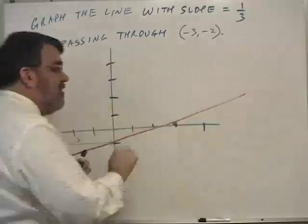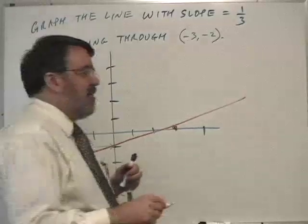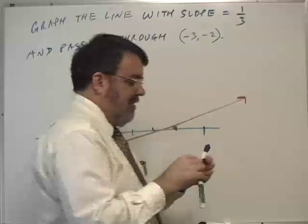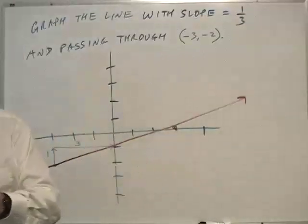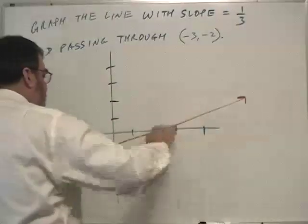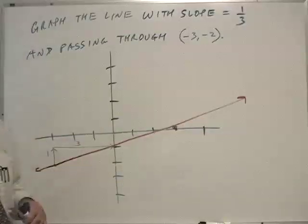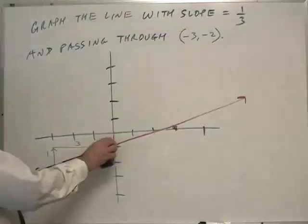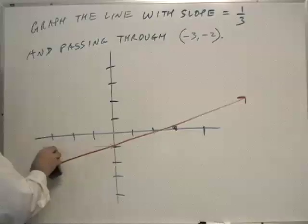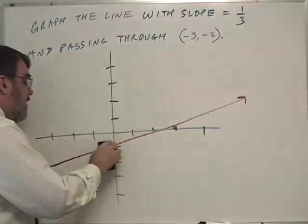This, whoops, I slightly missed there. That's what happens when you don't use a straight edge sometimes. So our line has a gentle slope of 1/3, passes through (-3, -2). Let me erase this green stuff here.